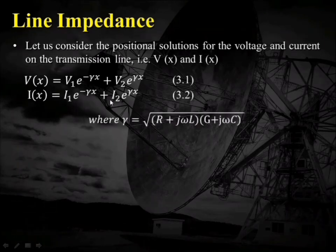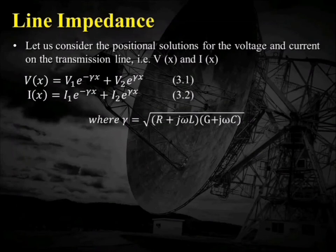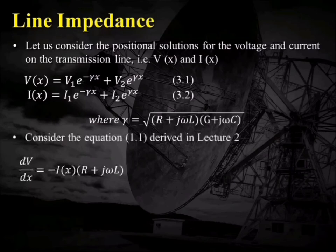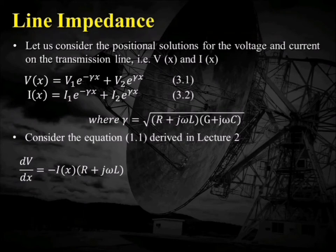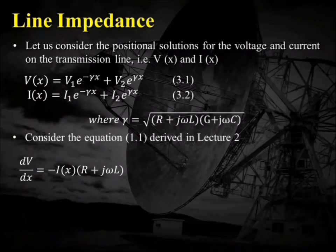Now, gamma here is equal to the square root of (R + jωL)(G + jωC). This gamma is a secondary constant. Also, we have derived in Lecture 2, equation 1.1, that dV/dx equals minus I(x) into (R + jωL).